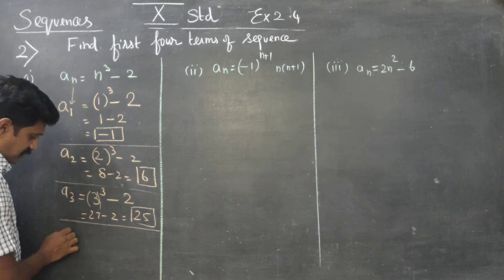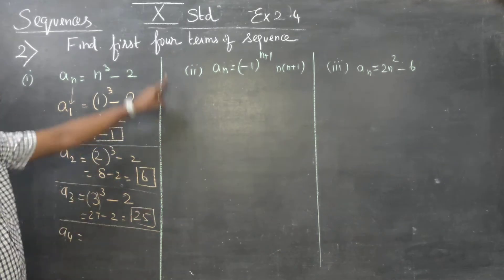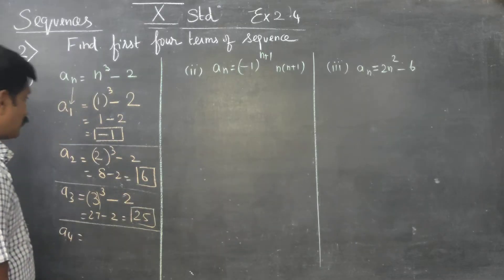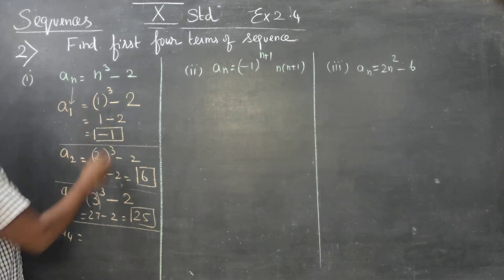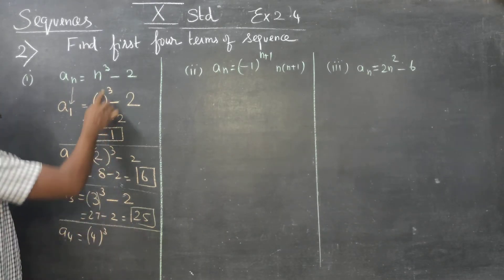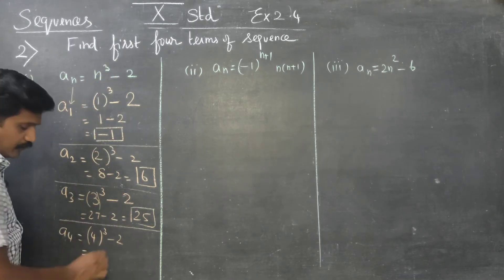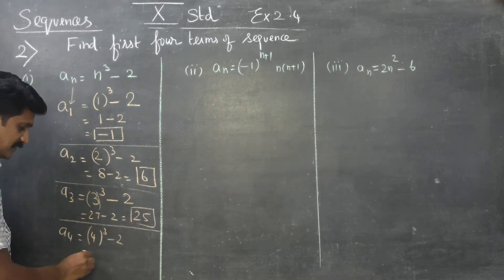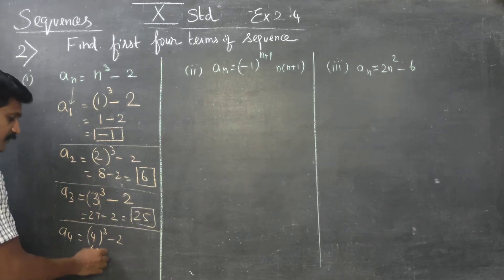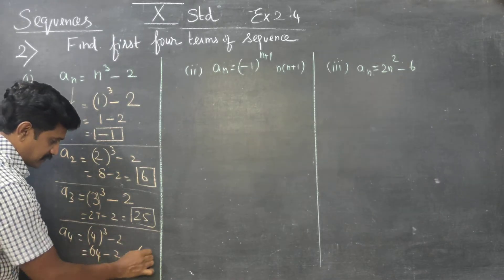The last one is A4. Put n = 4: 4 cube minus 2. 4 into 4 into 4 equals 64. 64 minus 2, answer is 62.